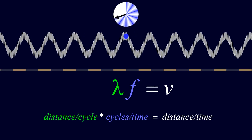Thus, for each harmonic wave, the product of the wavelength and the wave's frequency must be equal to the wave velocity.